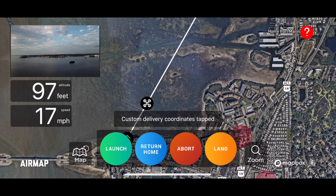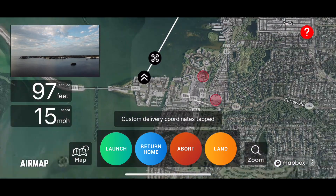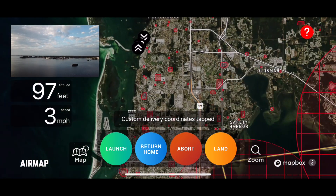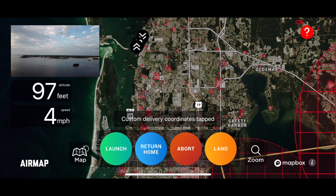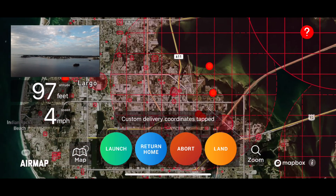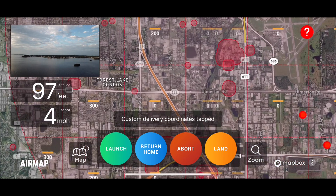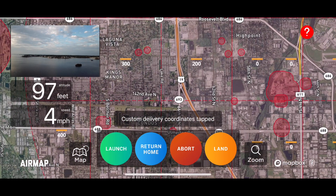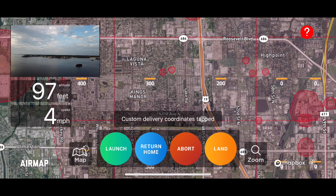With this application I also have full airspace awareness. All these little red areas are either schools, hospitals, or prisons. Then you have your controlled airspace — for example, this is the St. Petersburg airport. In these grid spaces you can fly up to 200, 300, or 400 feet based on which airspace grid you're in.